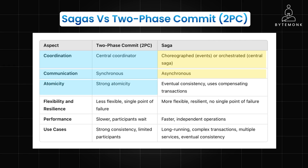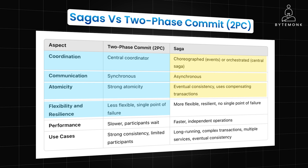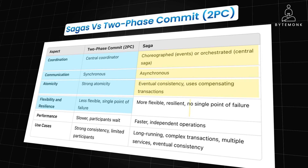2PC uses synchronous communication between the coordinator and participants — participants must wait for the coordinator's decision before proceeding. Sagas primarily rely on asynchronous communication through events; participants can react to events independently without waiting for a central coordinator. 2PC offers strong atomicity guarantees: all operations are treated as a single unit — either all succeed or all fail. Whereas in the case of a saga, it provides eventual consistency. While individual steps of the saga might be atomic, the overall saga might not be, and compensating transactions are used to undo previous actions if a step fails, though there might be a temporary inconsistent state before compensation completes. 2PC is also less flexible and more susceptible to failures — if the coordinator fails, the transaction may get stuck. Whereas sagas are more flexible and resilient, with compensating transactions available to recover from errors and no single point of failure.